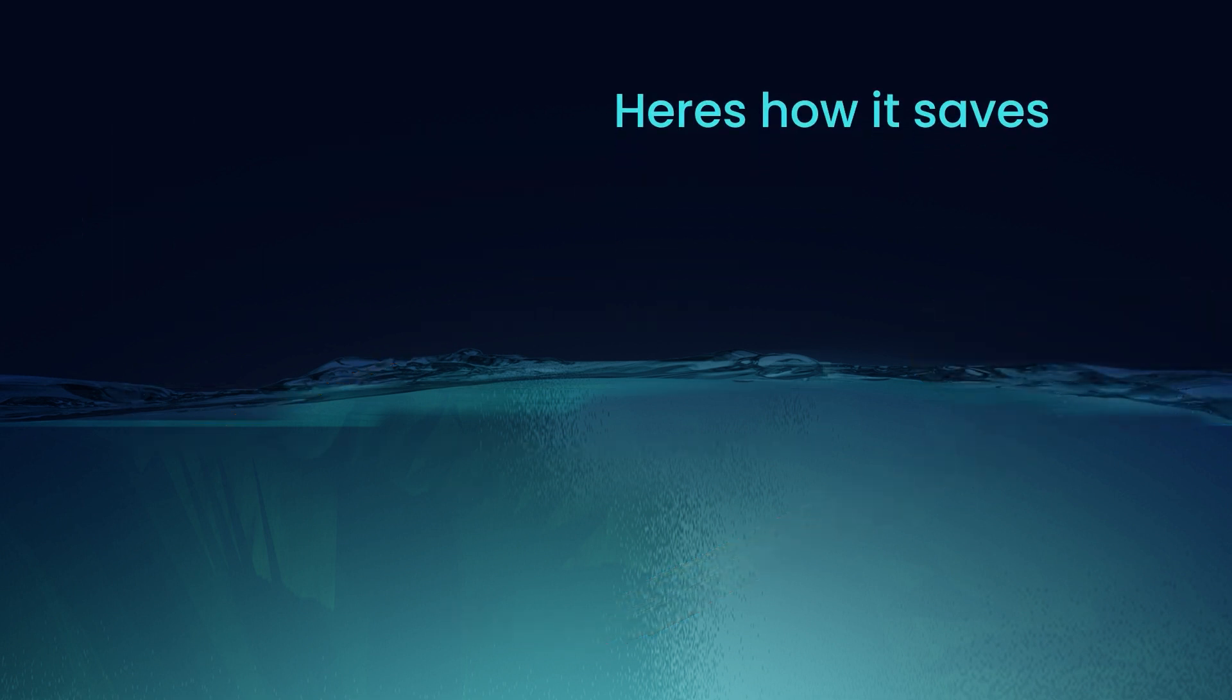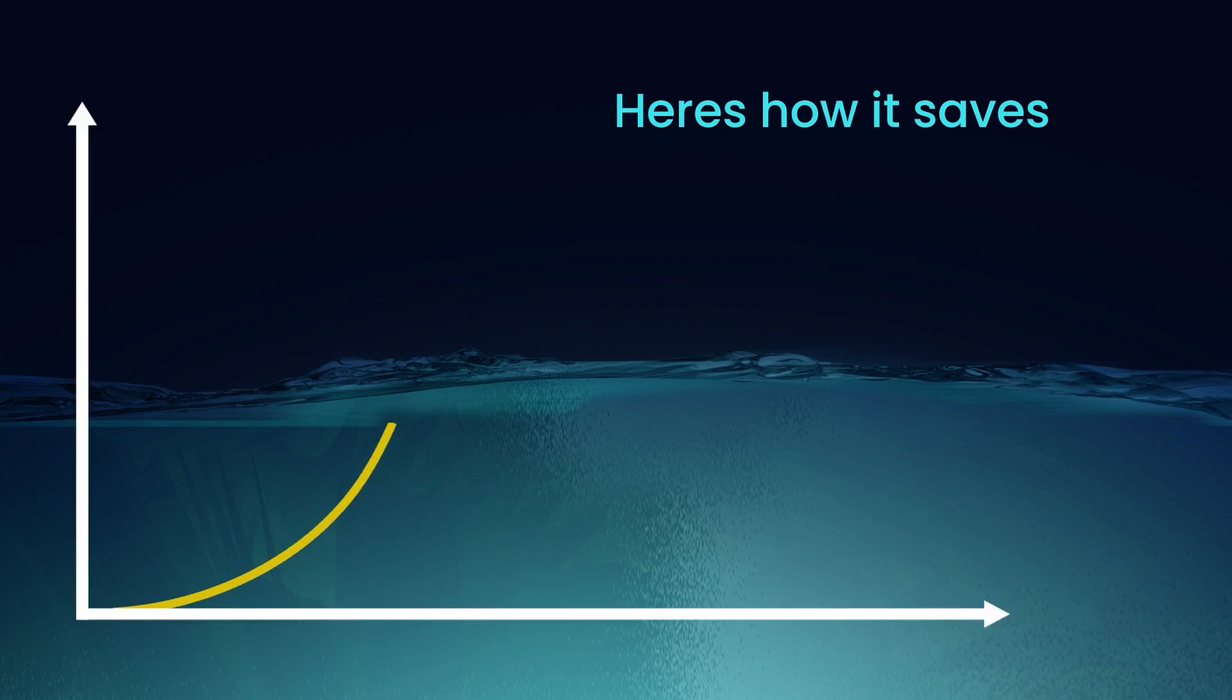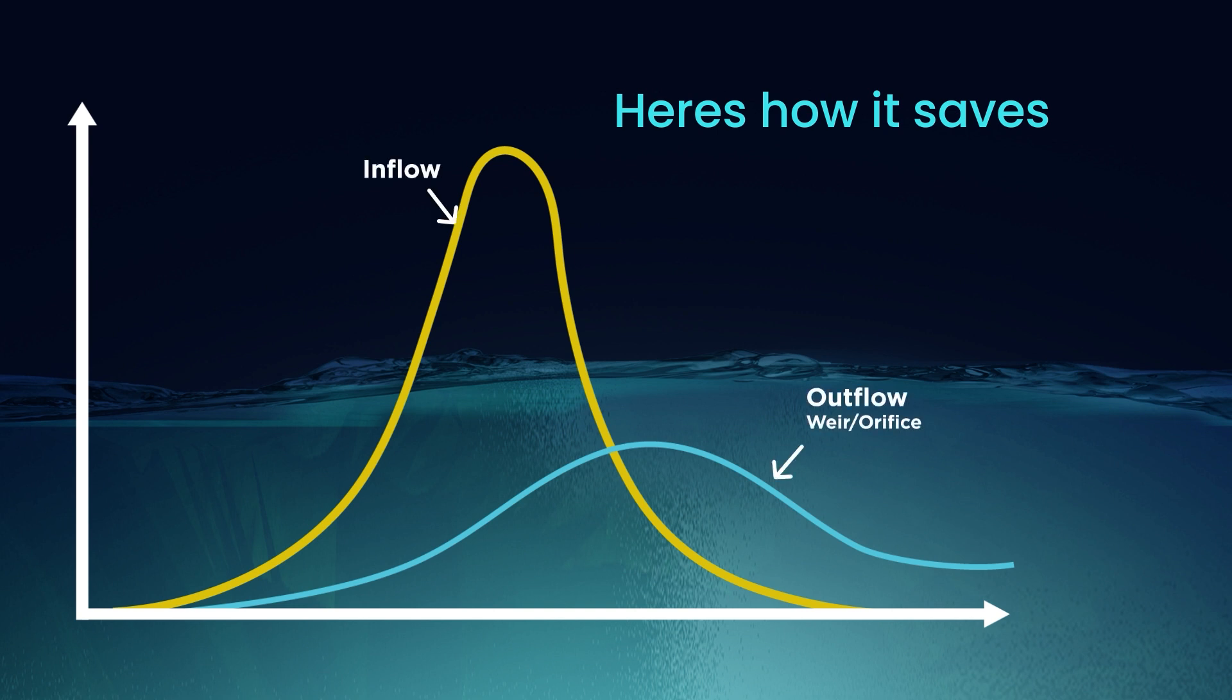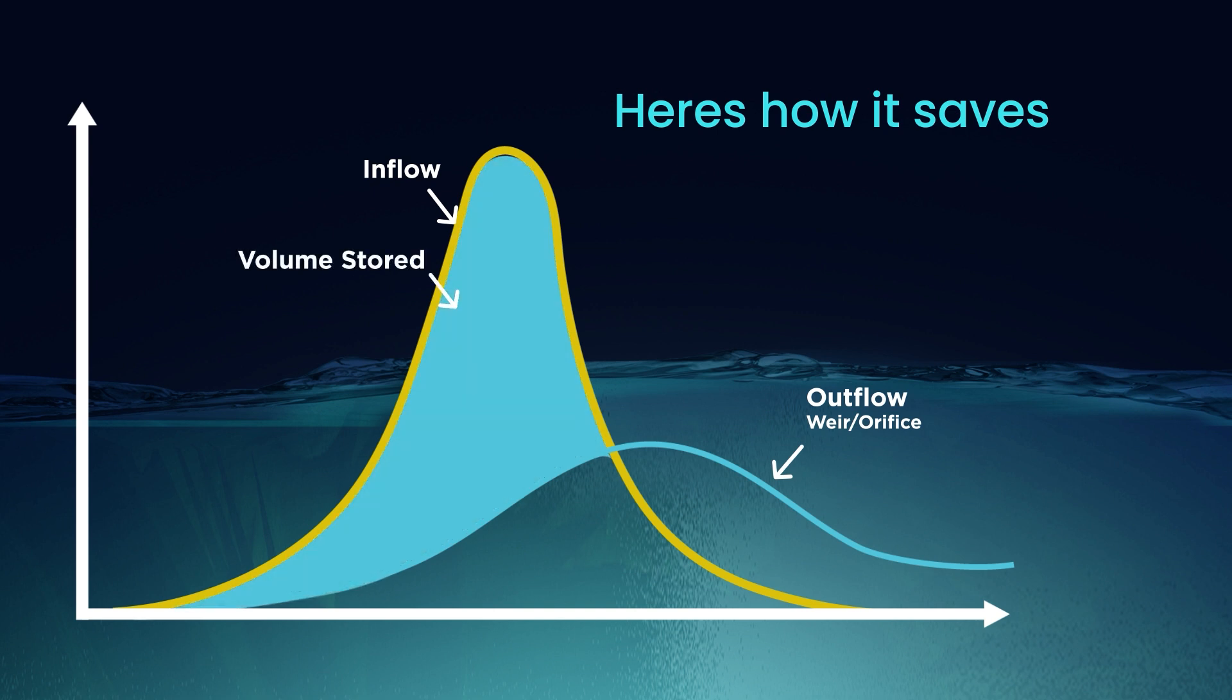Here's how it saves. The volume required in a stormwater detention system is the difference between what flows in over time and what flows out over time. These curves are known as the inflow hydrograph and the outflow hydrograph. The area between the curves represents the volume of storage required.